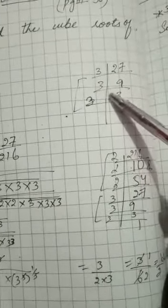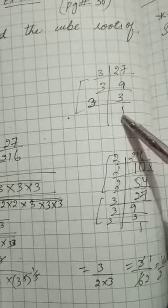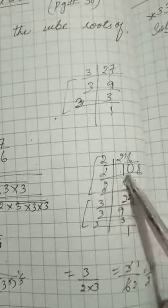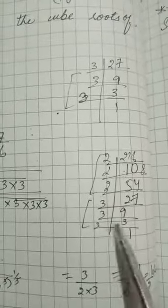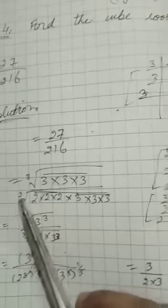I have to find out the LCM: 3 into 27, 3 into 9, 3 into 3, 3 into 1. So for 216: 2 into 216, 2 into 108, 2 into 54, 3 into 27, 3 into 9, 3 into 3, 3 into 1. Here you have to check that you have three pairs.